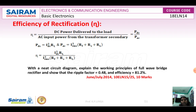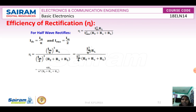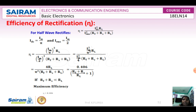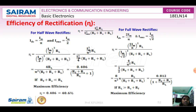Using this formula, we calculate the efficiency for both the half wave and full wave rectifier. Using the previously derived values of IDC and IRMS, substituting and simplifying the expressions, the maximum efficiency of the half wave rectifier is eta equals 40.6%. For the full wave rectifier, the efficiency is 81.2%.